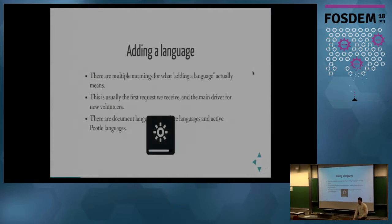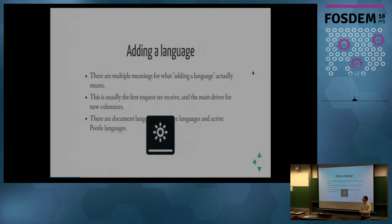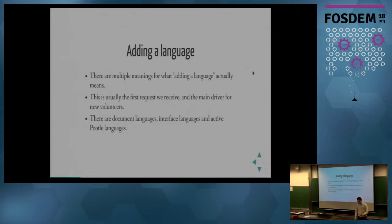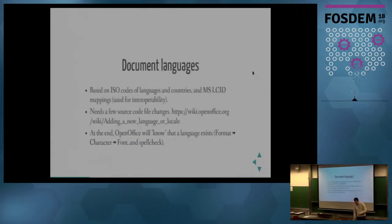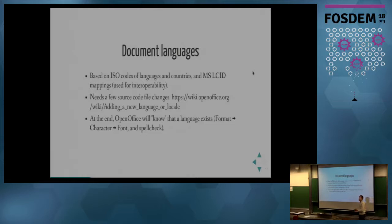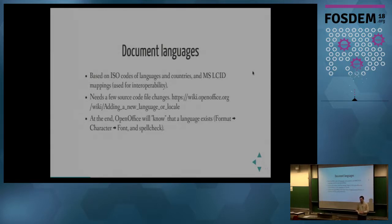Adding a language to OpenOffice doesn't mean anything in itself, since adding a language means a lot of different things. There are document languages, there are interface languages, and in the OpenOffice case, there are the active portal languages. Each of them is different. The document language is the most official part. If I want to have OpenOffice support a new language, we refer to international codes and standards.